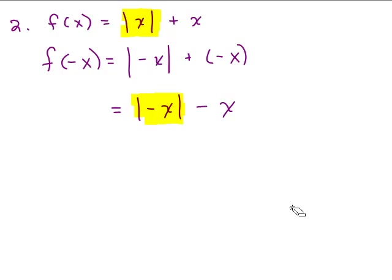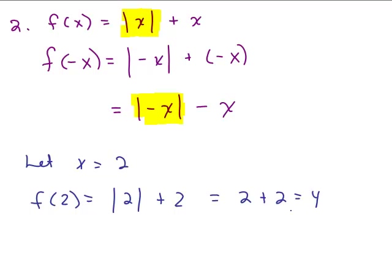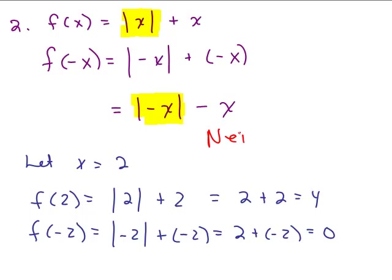And to convince yourself further of this, what you could do is plug in some numbers. So let x equal 2 for instance. If you're going to plug in f of 2, what do you get? You get the absolute value of 2 plus 2, which is 4. And then let's plug in the absolute value of negative 2. Get negative 2 plus 2, I'm sorry, plus negative 2. I forgot to plug in negative 2. Absolute value of negative 2 is 2 and 2 plus negative 2 is 0. So notice when I plugged in f of negative 2, I did not get the same number and I did not get the opposite number. So therefore, this is neither.